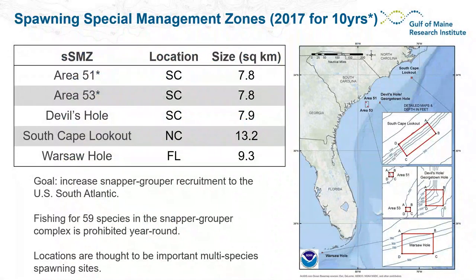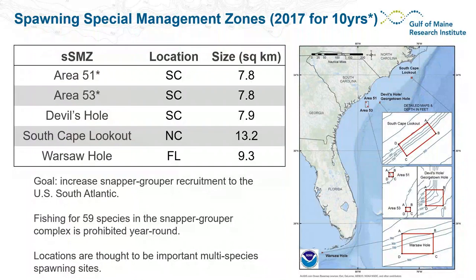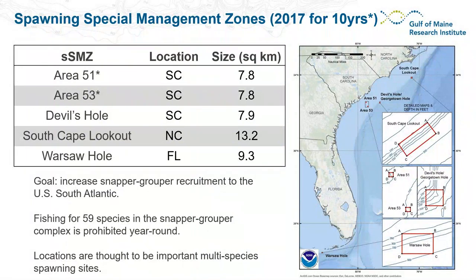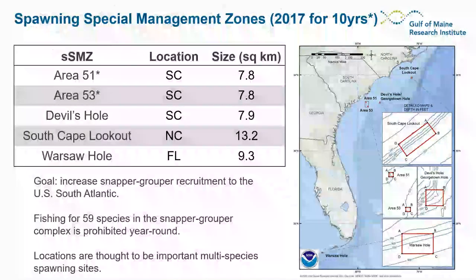As context, in 2017 the South Atlantic Fishery Management Council implemented five spawning special management zones. They're shown on a map offshore South Carolina, North Carolina, and Florida, generally on the order of five to ten square kilometers in size. The explicit goal was to increase snapper recruitment to the populations in the U.S. South Atlantic by protecting spawning areas, so fishing for all species in the snapper grouper complex is prohibited year-round.